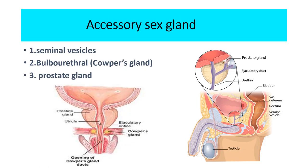The accessory sex glands are specialized structures found in males that produce fluids essential for the motility, nourishment, and protection of sperm. Males have three of these glands, and each one contributes to the production of semen: the seminal vesicles, the bulbourethral gland, and the prostate gland.